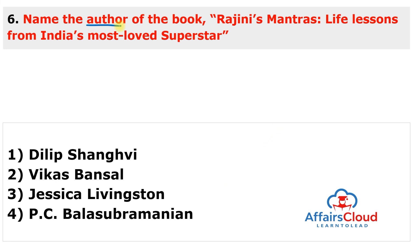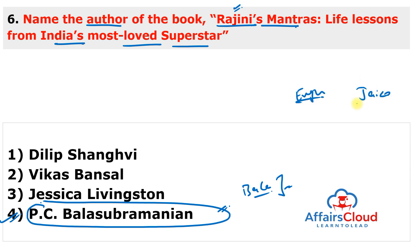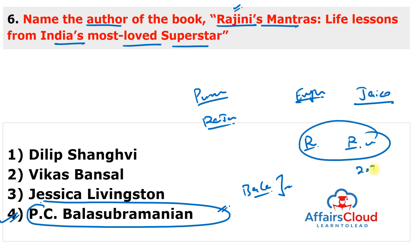The next question: Name the author of the book 'Rajani's Mantra: Life Lessons from India's Most Loved Superstar,' where Rajani refers to Rajinikanth. This book is authored by PC Bala Subramanyam. He authored it in English, and it was published by Jaico Publishing House India. PC Bala Subramanyam's first book was 'Rajani's Punch Tantra and Raja Krishnamurti,' which became a national bestseller. He also wrote 'Grand Brand Rajani' and 'Rama N. Ramakrishna,' published in 2022.